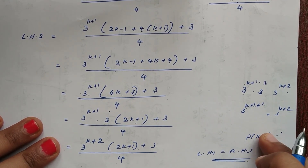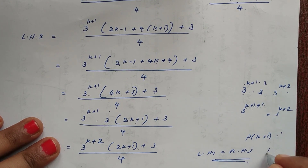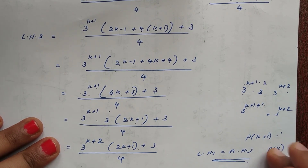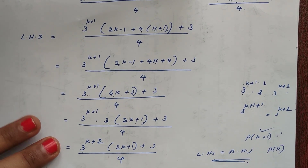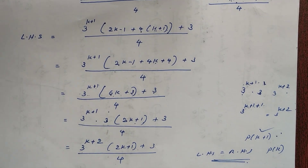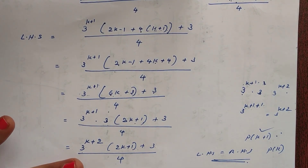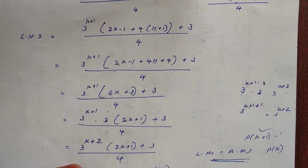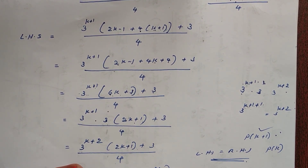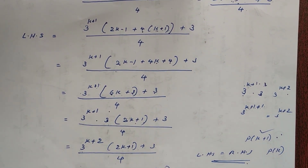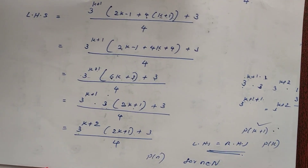P of k plus 1 is true because P of k is true. Therefore P of n is true for all n belonging to the natural numbers.